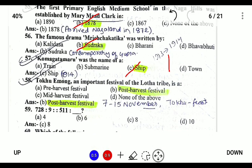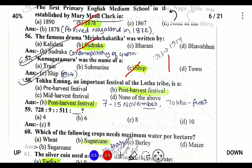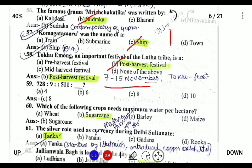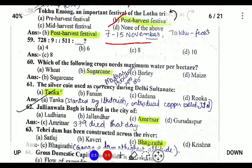Tokhu Emong is an important festival of the Lotha tribe and is post-harvest in nature — meaning it is celebrated after crops are harvested. It is celebrated from 7th to 9th November, and Tokhu means feast.